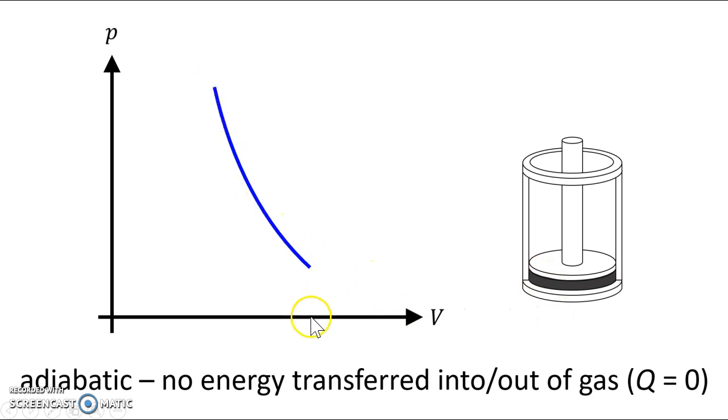That would be an adiabatic compression. So which way would the line point? It would point to the left, decreasing the volume. Or you grab your piston, and you pull it up really fast, and the gas cools. But we haven't had any time for heat energy to transfer into the gas from the outside. That's why adiabatic processes typically have to be done very quickly.